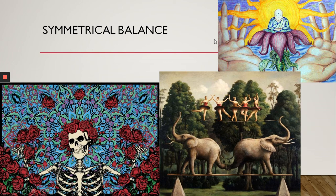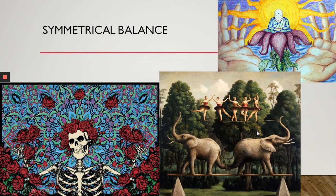Here we have examples of symmetrical balance. In this picture of elephants with ballet dancers, it is similar on both sides but not identical — if you folded it in half, it wouldn't be exactly the same. For example, one elephant has its front legs slightly bent and forward, while the other's front legs are together. One's tusks are more straight forward, while the other's are very skewed. Even though it's not identical, we still call it symmetrical balance.